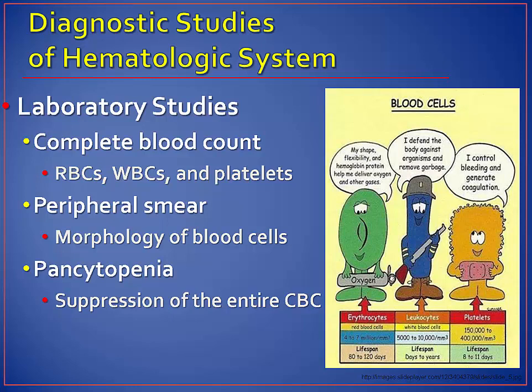A peripheral smear is used to look at the morphology — the shape and appearance of blood cells. A shift to the left indicates that the number of immature polymorphonuclear neutrophils, or bands, is elevated and is a sign of severe infection. Pancytopenia is a decrease in the number of red blood cells resulting in anemia, decreased white blood cells (also known as leukopenia), and decreased platelets (known as thrombocytopenia).